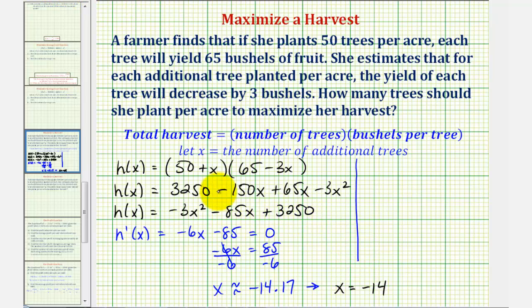But we should recognize that the harvest function here is a quadratic function with a negative leading coefficient. So we have a parabola that opens down, or a concave down function. Therefore, this x value would maximize the function.